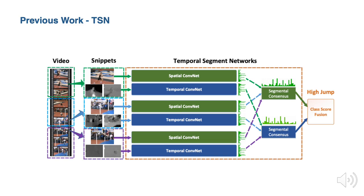In GTAN, it recognizes actions at the video snippet level. While in PGCN, it classifies each proposal, recognizing actions at the proposal level. We can also do it at the video level. TSN — the Temporal Segment Network — is a commonly used framework for video-based action recognition. TSN is based on the idea of long-range temporal structure modeling, combining a sparse temporal sampling strategy and video-level supervision to enable efficient and effective learning using the whole action video.